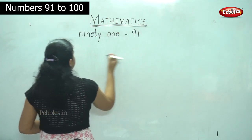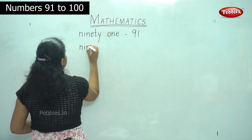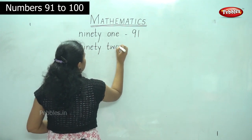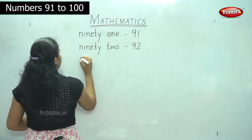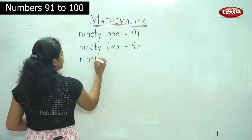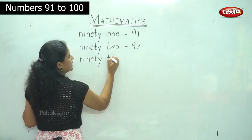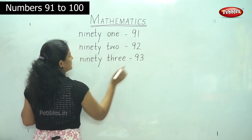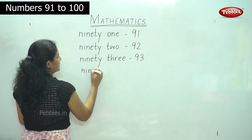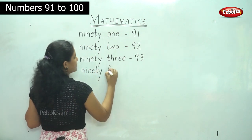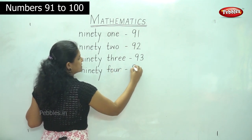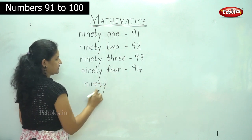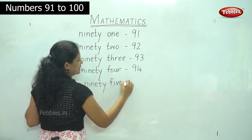So 91: N-I-N-E-T-Y, ninety, O-N-E, one — 91. 92: N-I-N-E-T-Y, ninety, T-W-O, two — 92. 93: N-I-N-E-T-Y, ninety, T-H-R-E-E, three — 93. 94: N-I-N-E-T-Y, ninety, F-O-U-R, four — 94. 95: N-I-N-E-T-Y, ninety, F-I-V-E, five — 95.